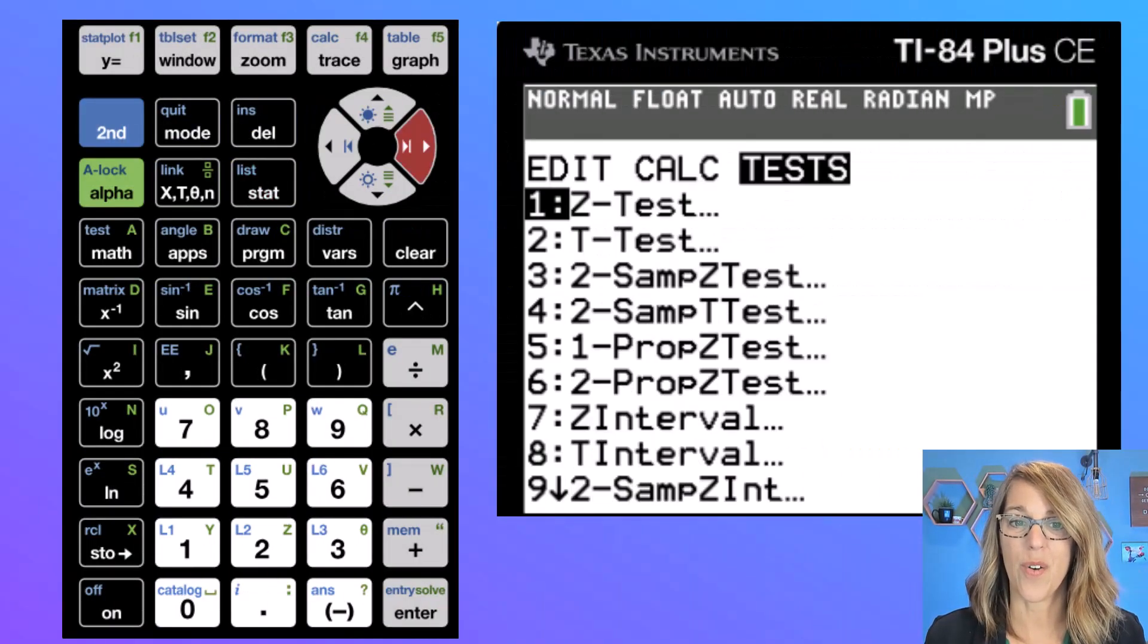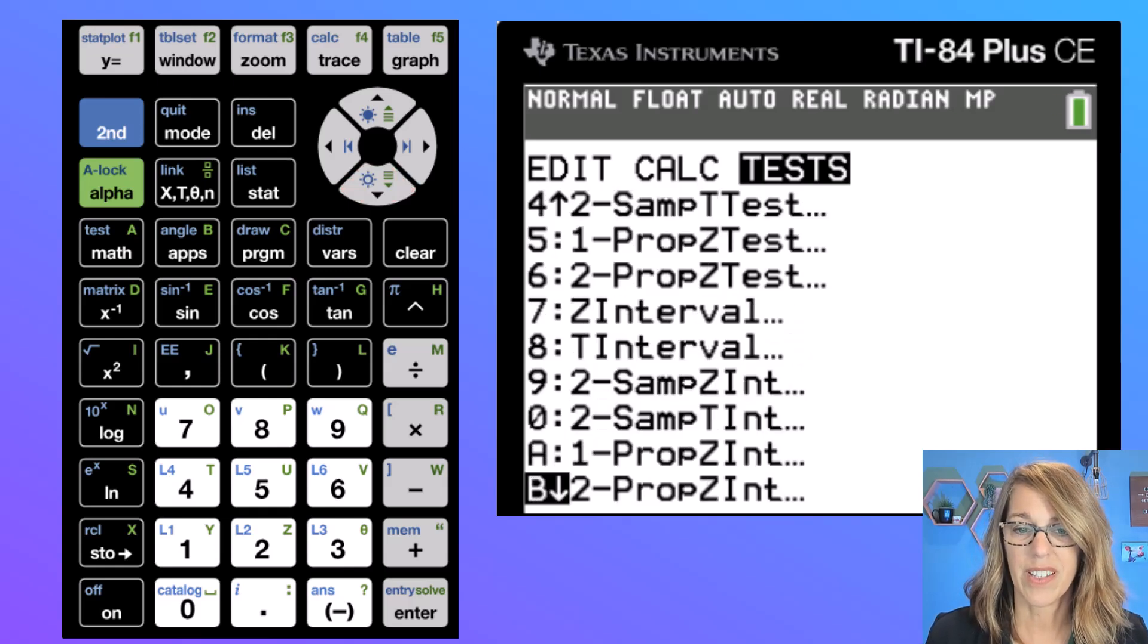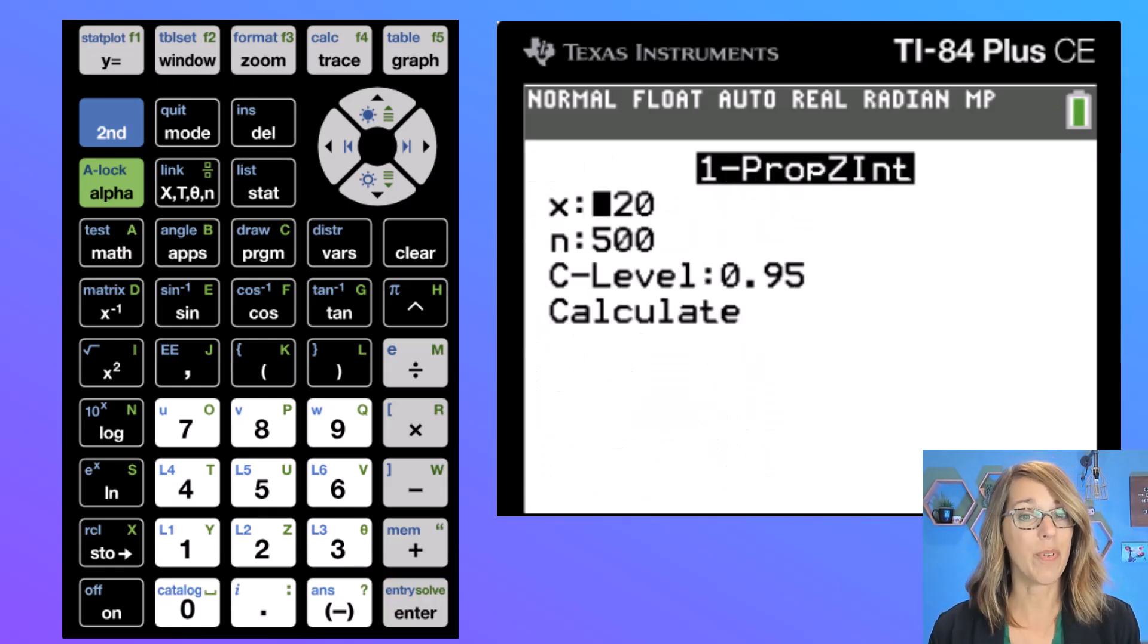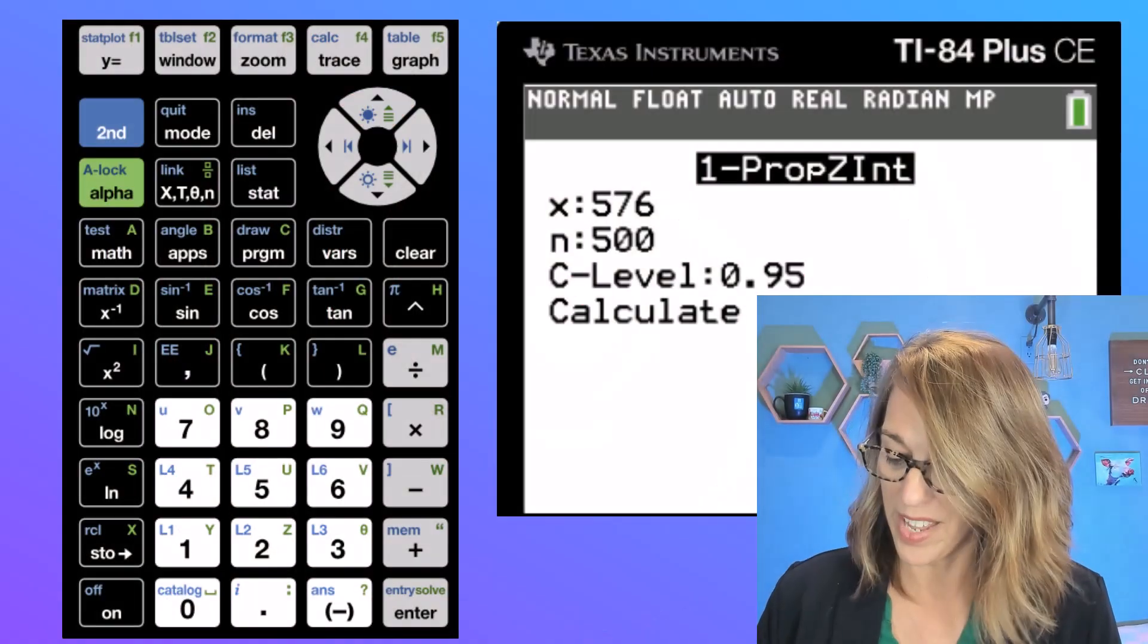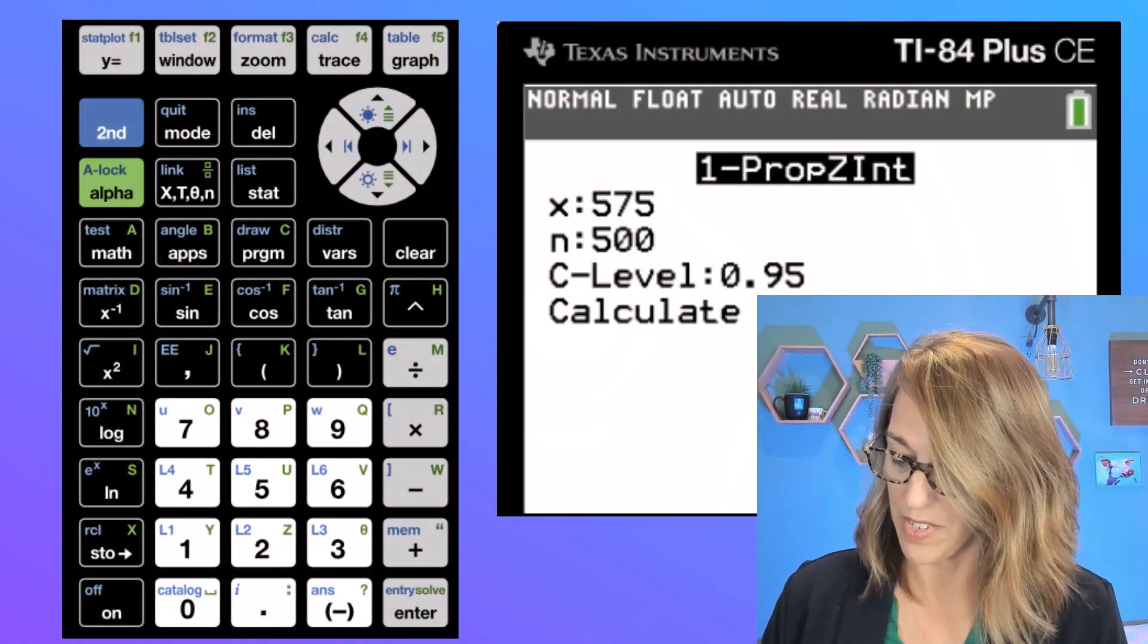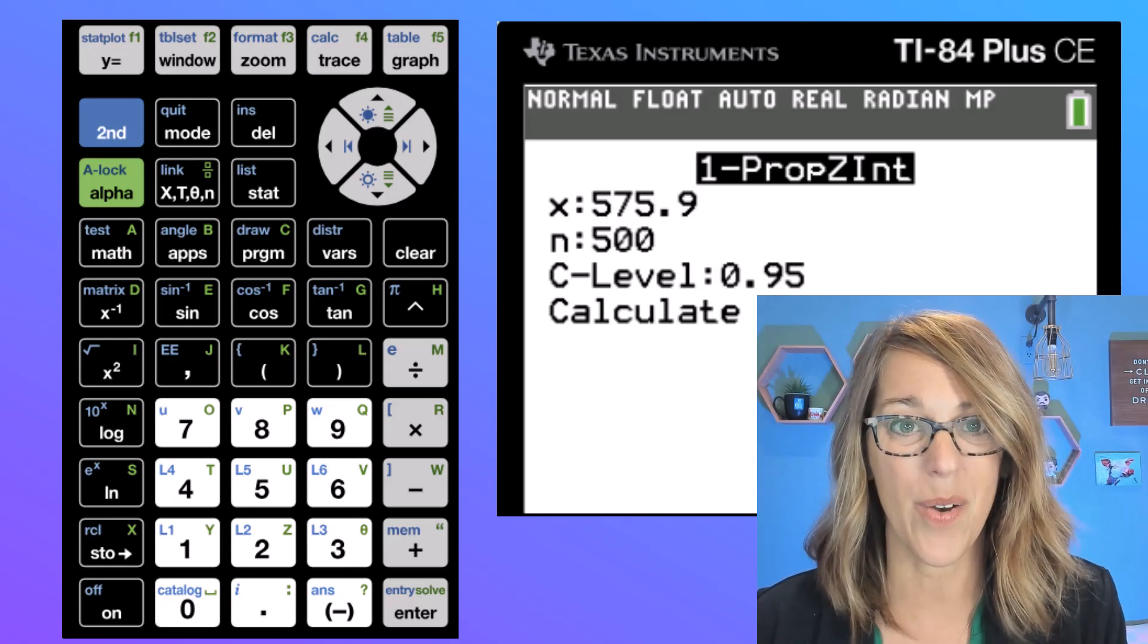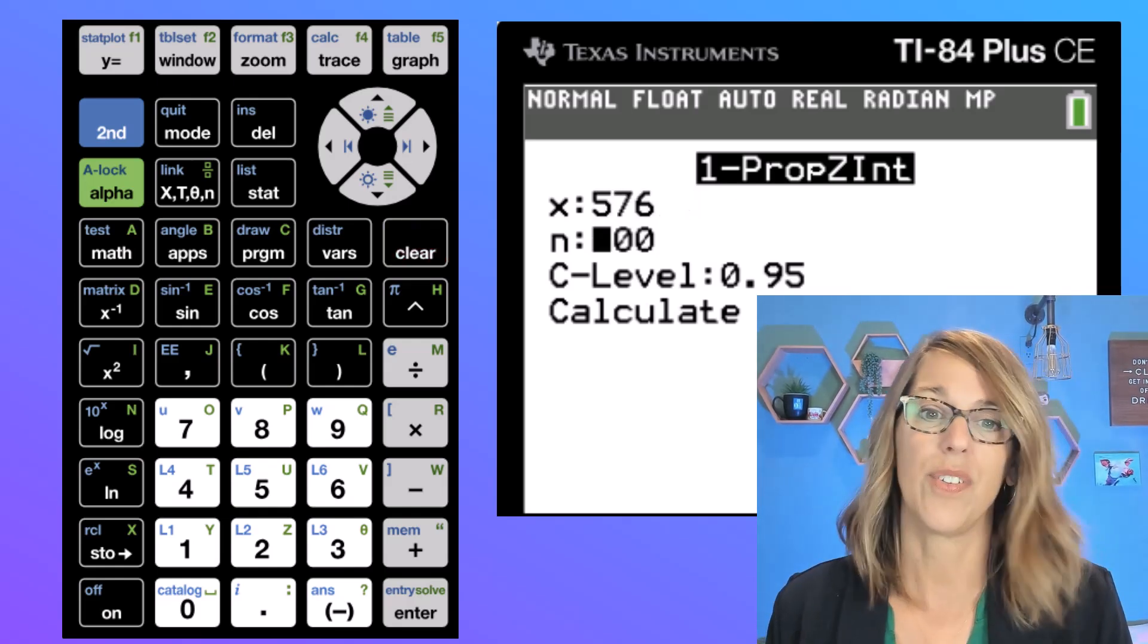We're going to go back to the stat menu over to tests looking for that one proportion interval. There it is, one proportion z interval, and then hit enter. Now I wanted x and I could put that 576 but you can also do your calculation right here and do 0.48 times 1200. Now I'm going to give you a really important warning. If you ended up with a decimal say you ended up with 575.9 your calculator will give you an error. This can only be a whole number so you would want to round that to the 576.